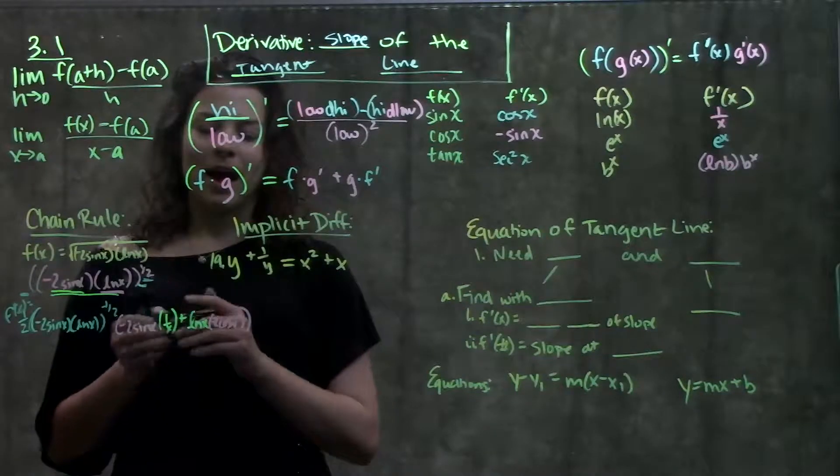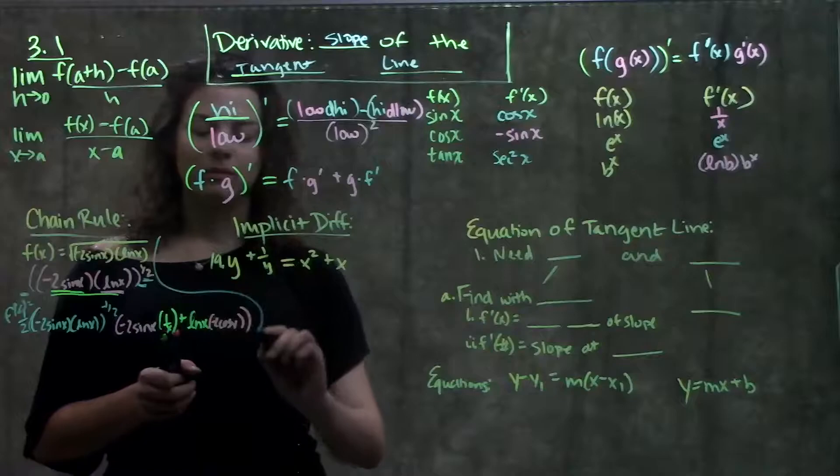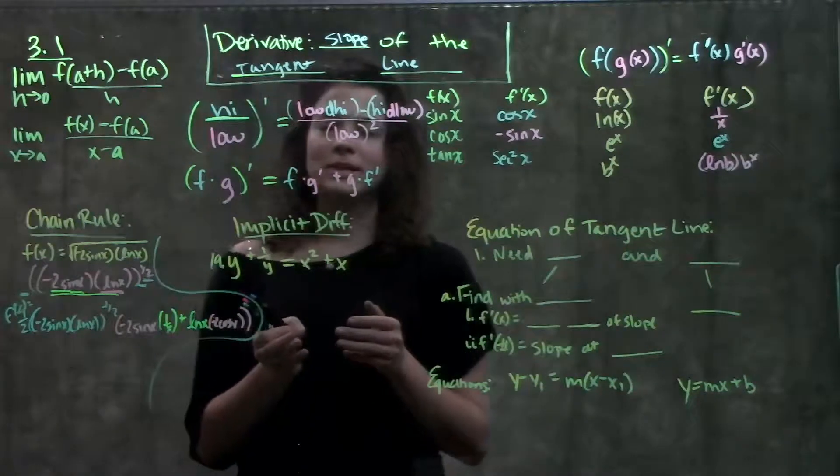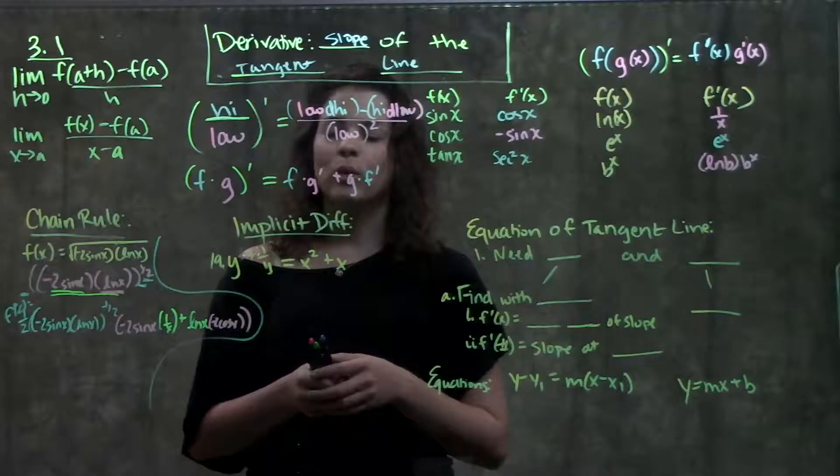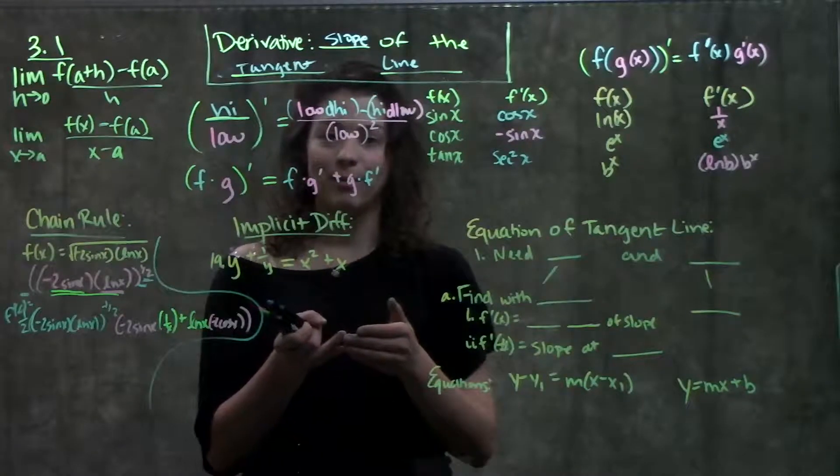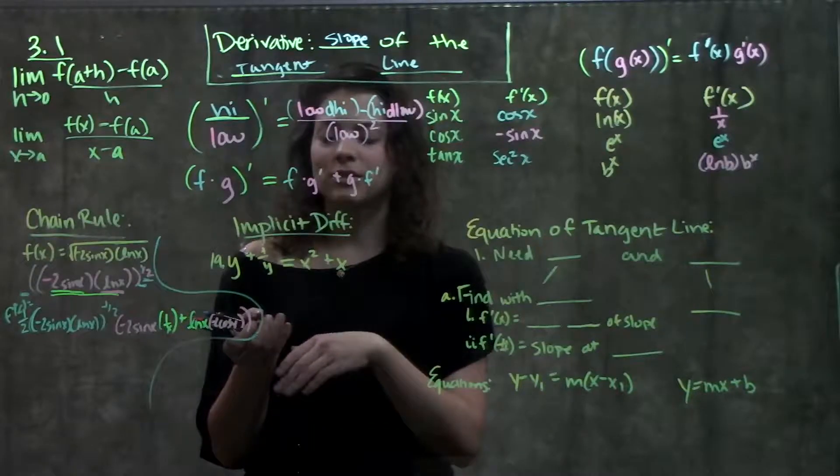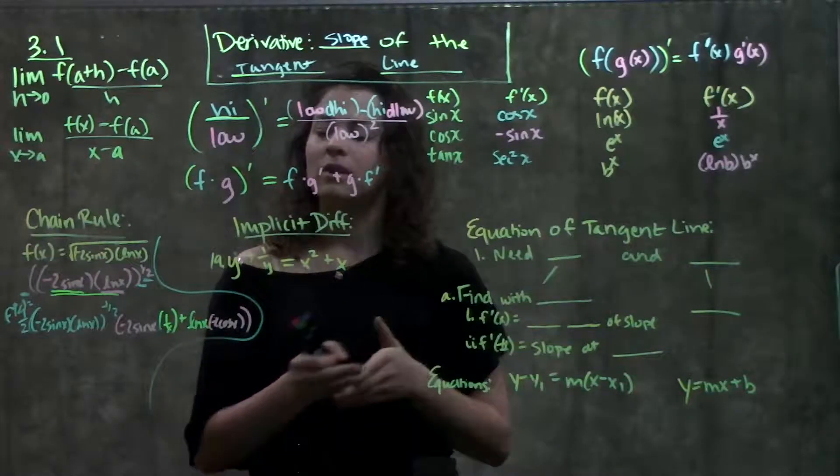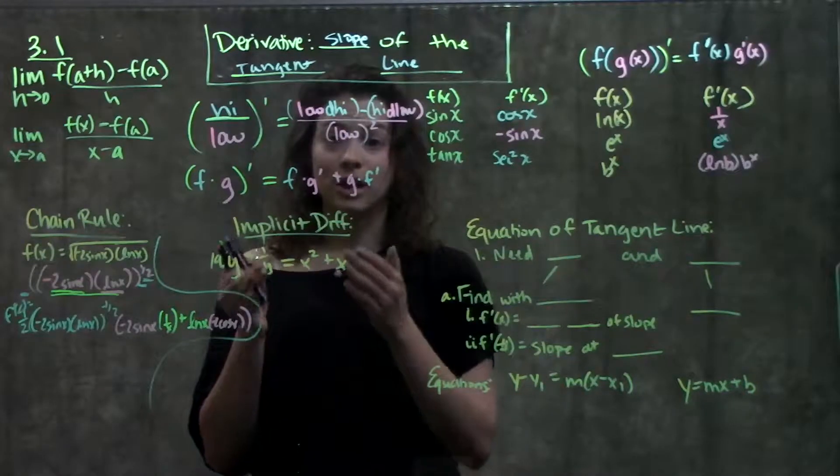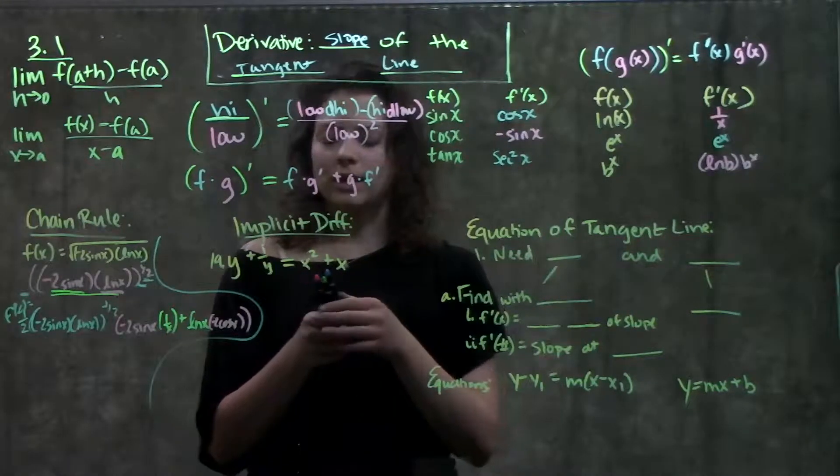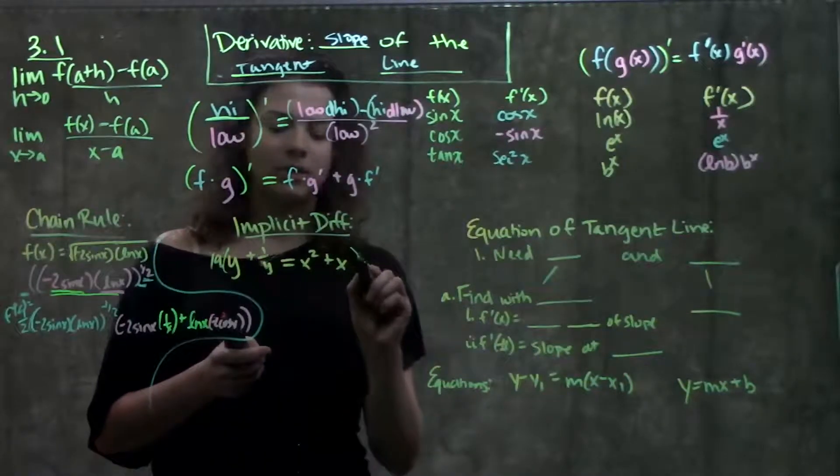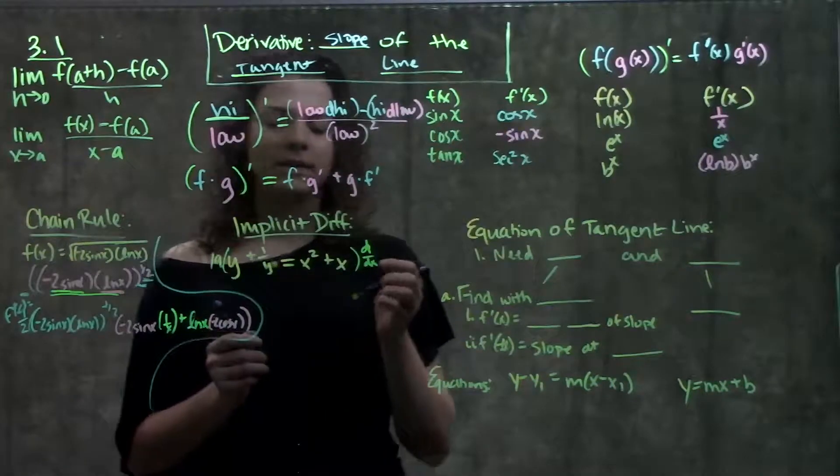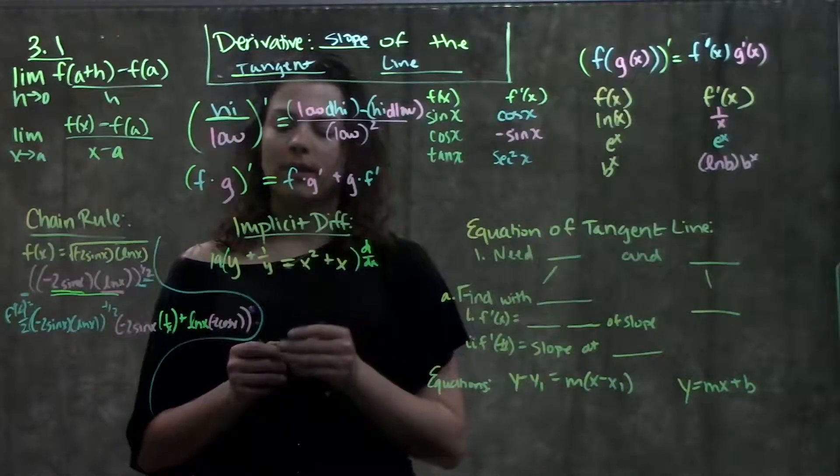Next example we're going to go through is a problem with implicit differentiation. Remember, implicit differentiation, we have to do that whenever we can't solve for one variable. I could try to change this function around, but I'd never be able to get just y equals something. Right? I'd never be able to just isolate all the y's on one side. So what I do here is I take the derivative of the entire thing.